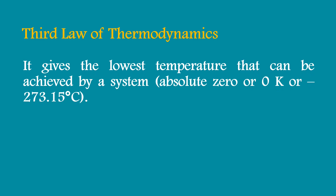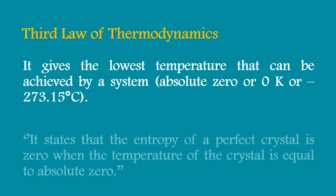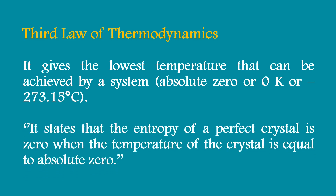Lastly, is the third law of thermodynamics. It gives the lowest temperature that can be achieved by a system, which is equal to absolute zero, or zero Kelvin, or negative 273.15 degrees Celsius. It states that the entropy of a perfect crystal is zero when the temperature of the crystal is equal to absolute zero. Therefore, a system at absolute zero has only one accessible state — its ground state — and the entropy of such a system is exactly zero.